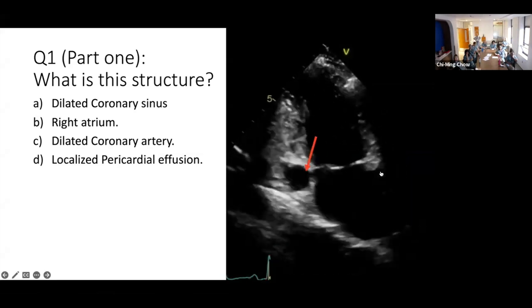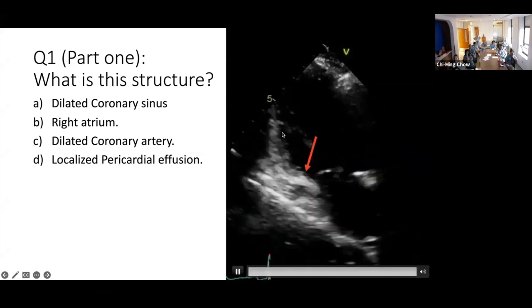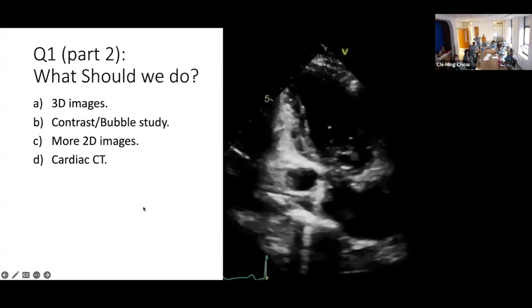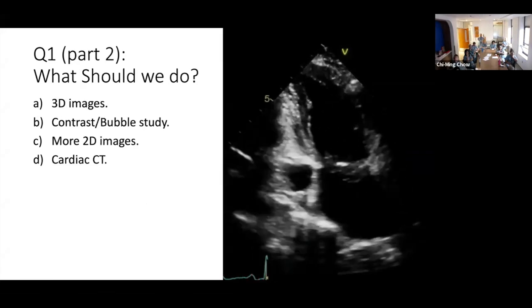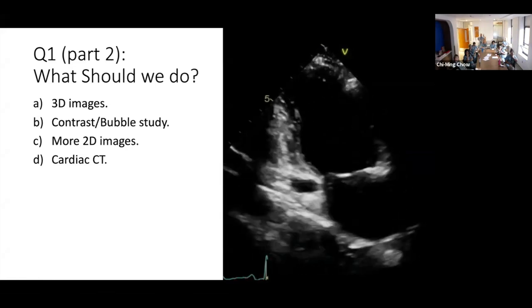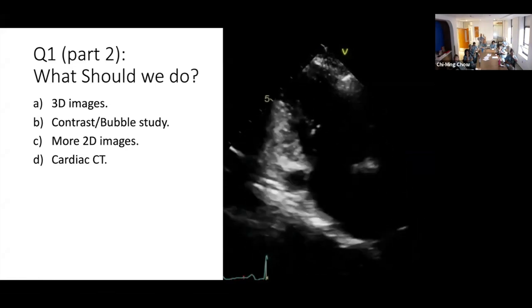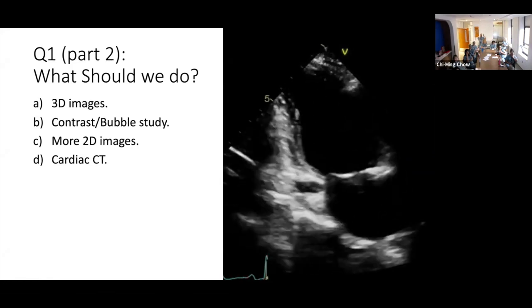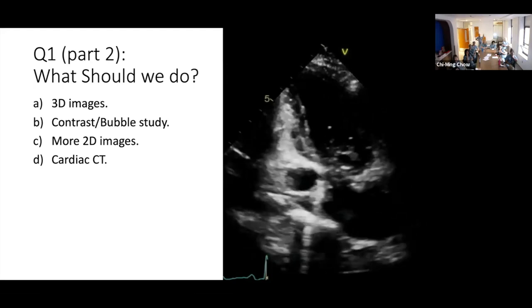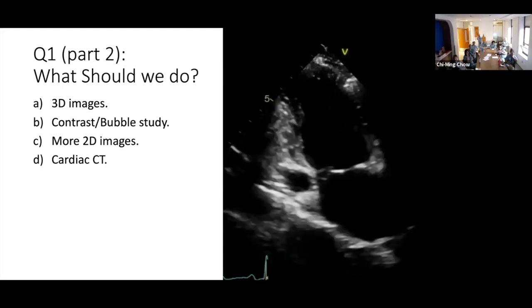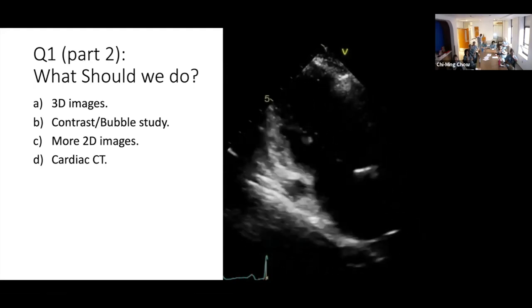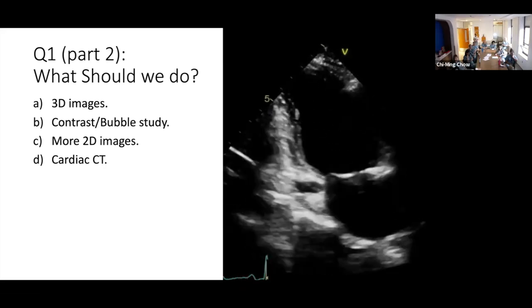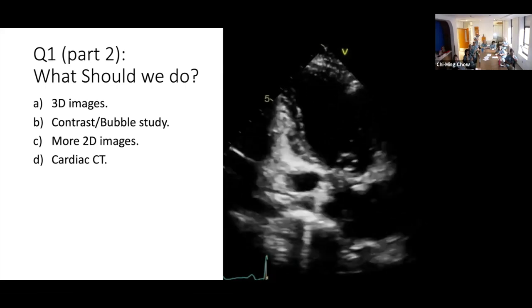70% said it is dilated coronary sinus, and this is what I thought initially. So if it's coronary sinus or not, how would you interrogate this structure? Would you do 3D? Would you do contrast or bubble study to check what the structure is? Would you do more 2D images? Or would you refer him to cardiac CT? Because cardiac CT is best with the anatomy.